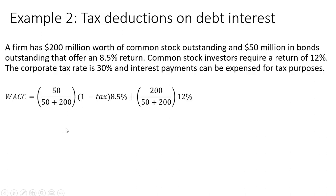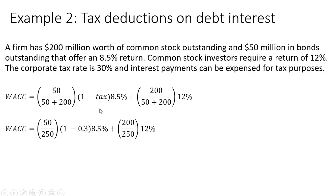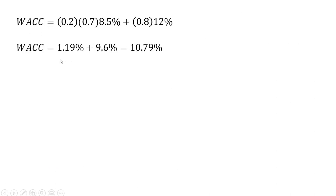The weighted average cost of capital formula now includes a (1 minus the corporate tax rate) term applied to the debt component, to account for the tax deduction for interest payments. Everything else remains the same. Plugging in the corporate tax rate of 30% and simplifying, we get a weighted average cost of capital of 10.79%.